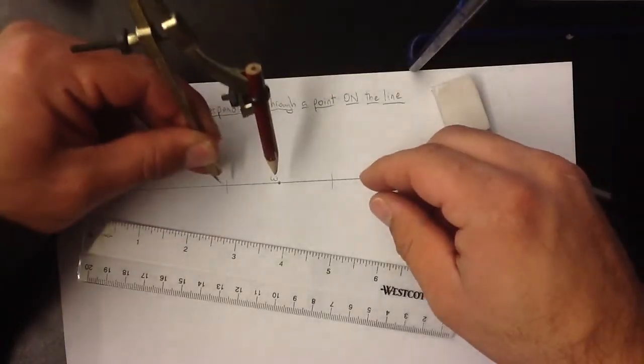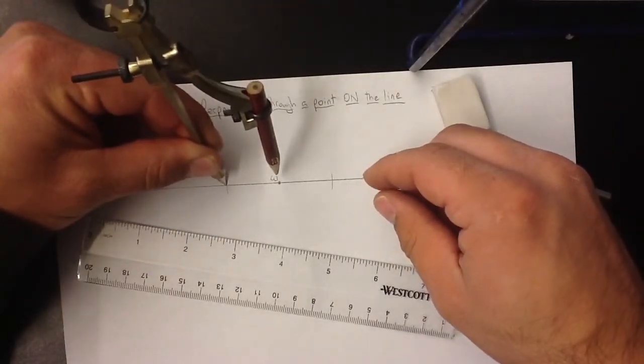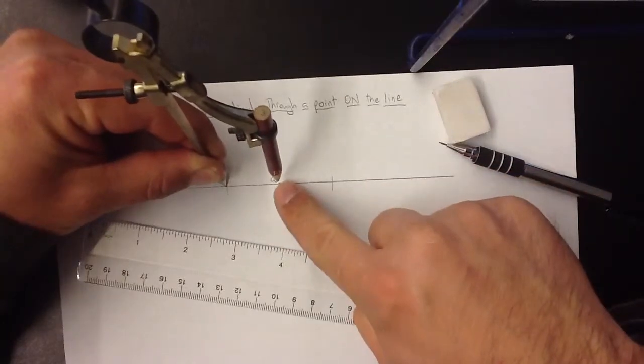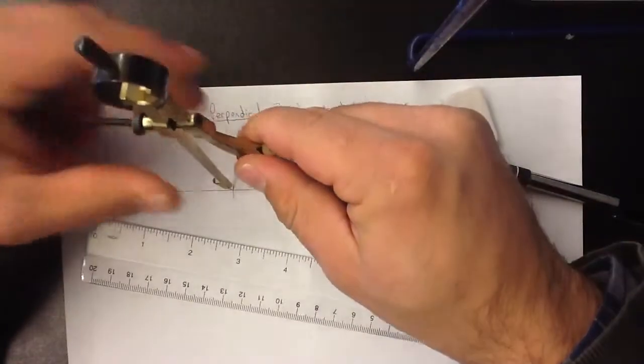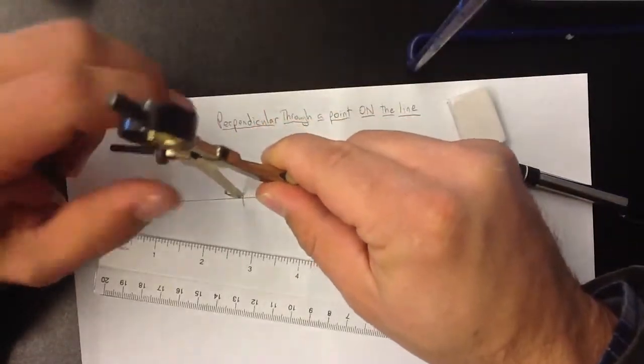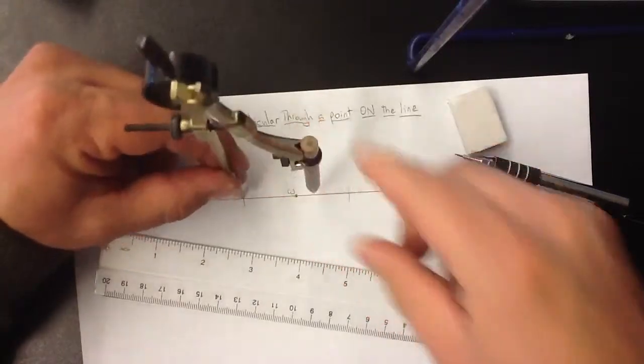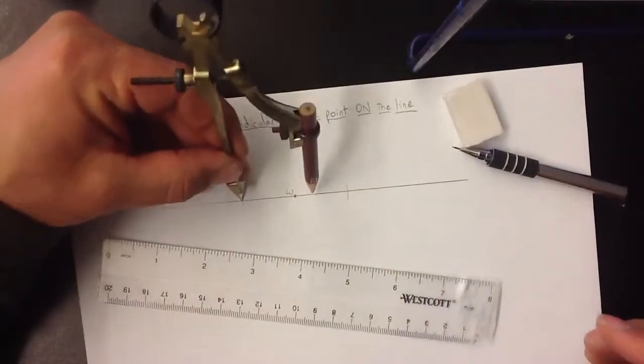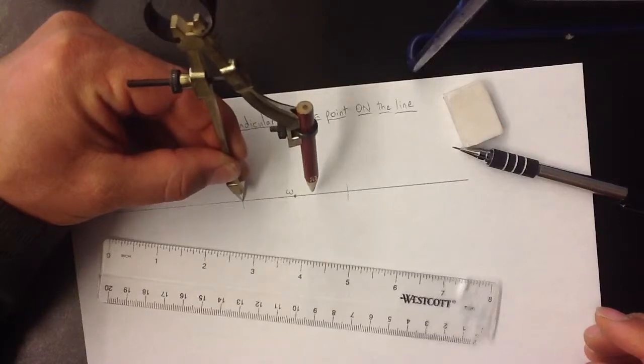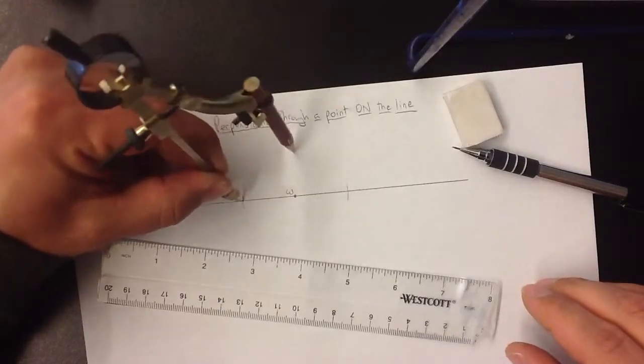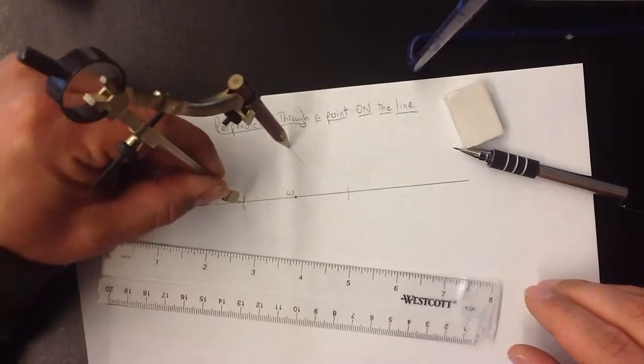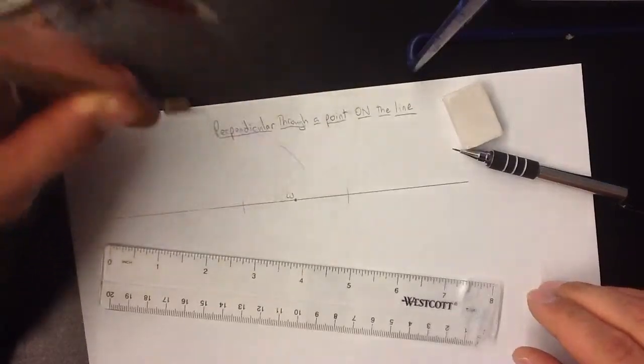Next, we're going to take the compass and put it on one of those arcs. And we're going to make it a little bit past that W point there. So we'll extend it just a little bit. In this case, something like that. So put the point on the arc and I'm going to arc above W. Doesn't have to be a big one.